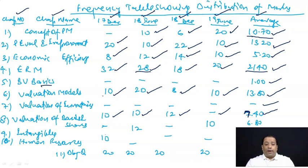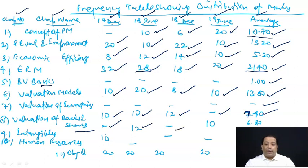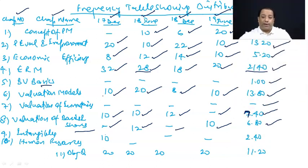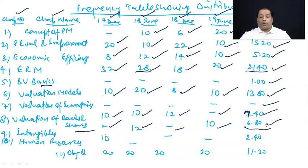Valuation of intangibles: 17 December में कुछ नहीं, 18 June में 12 marks, 18 December में कुछ नहीं, 19 June में 10 marks — average 6.80 marks की coverage। Valuation of human resources: 18 June, 18 December, 19 June में कुछ नहीं — average 2.4 marks की coverage।